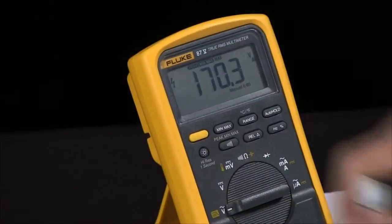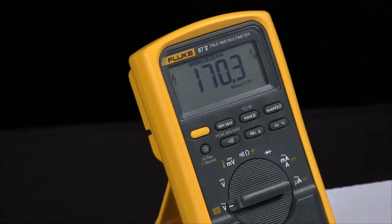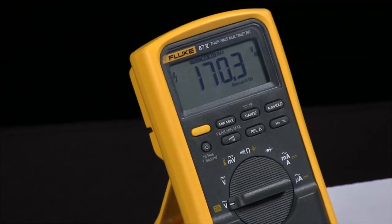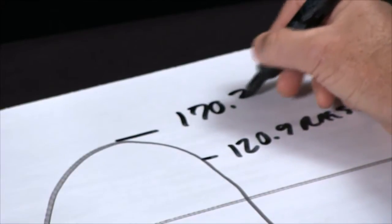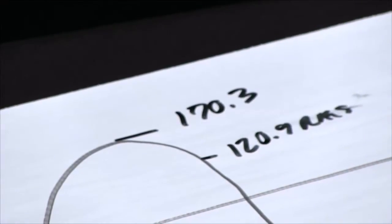By hitting the min-max and then the peak min-max, I put the meter into peak min-max mode, which shows me we have a peak of 170.3.